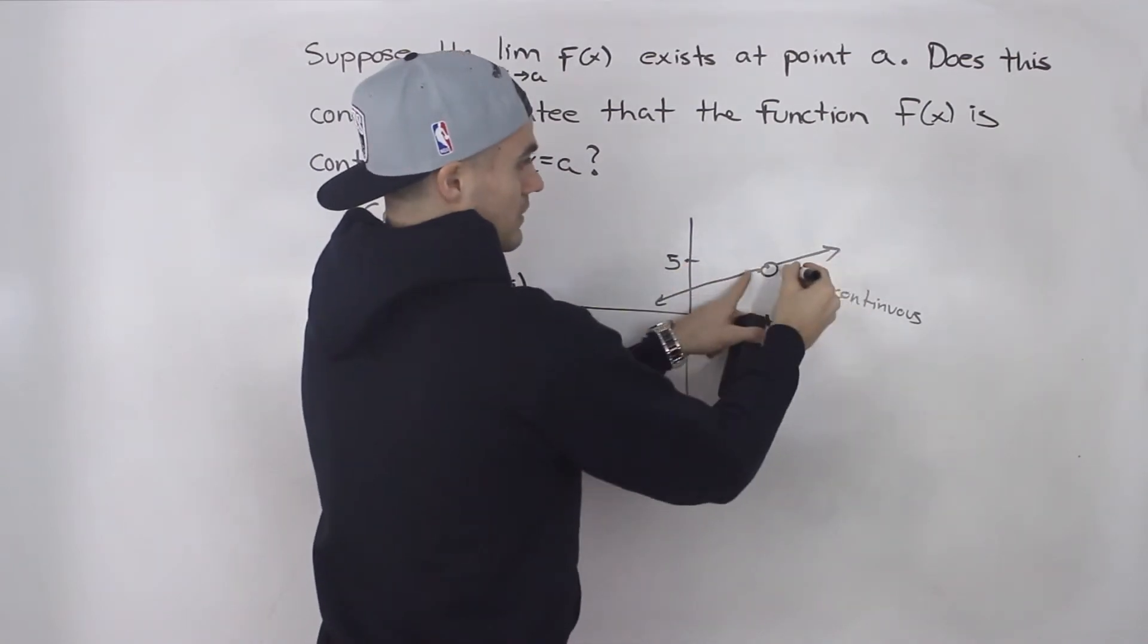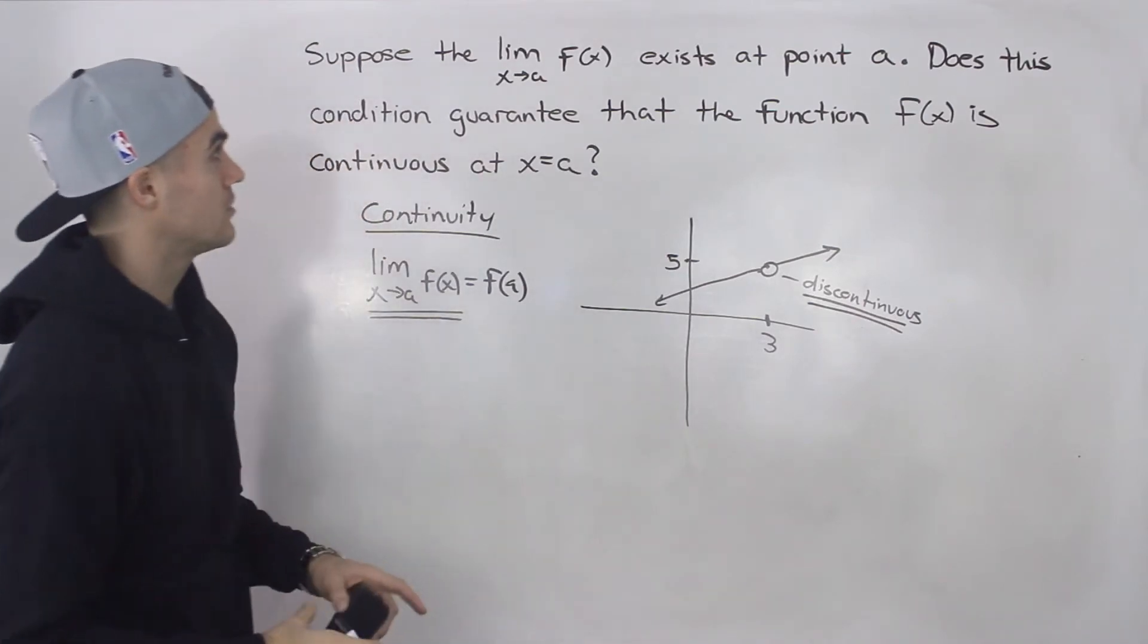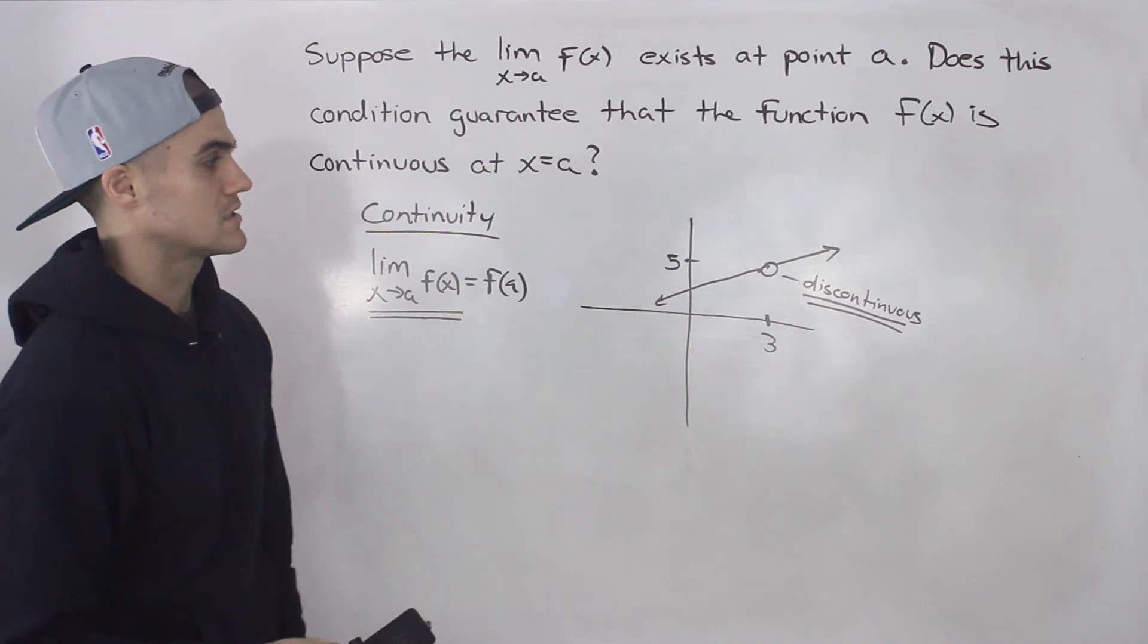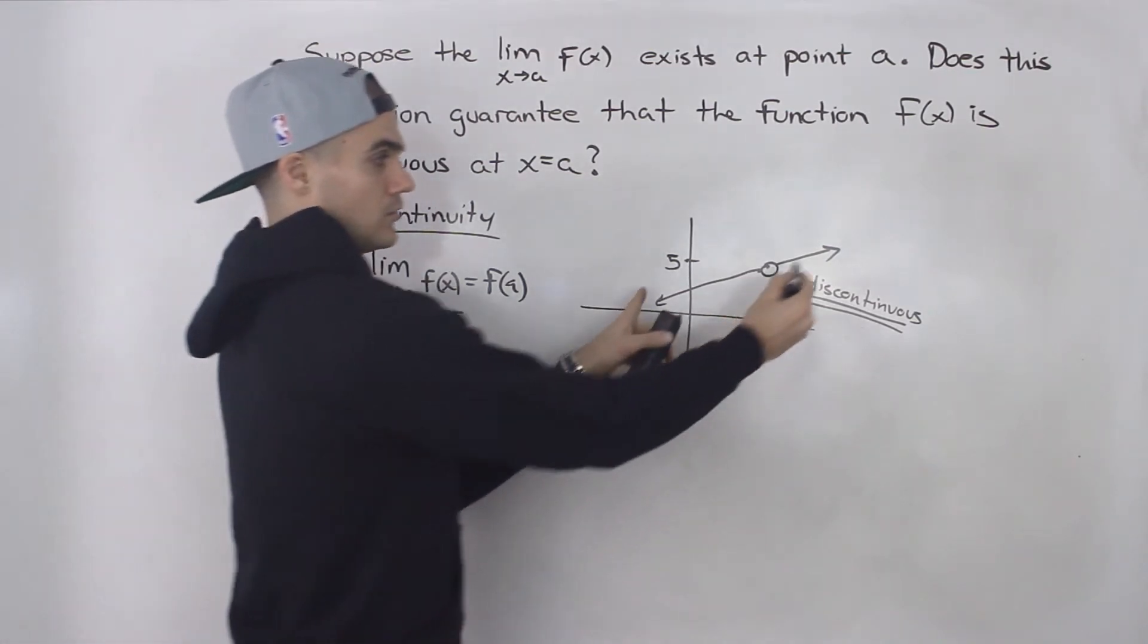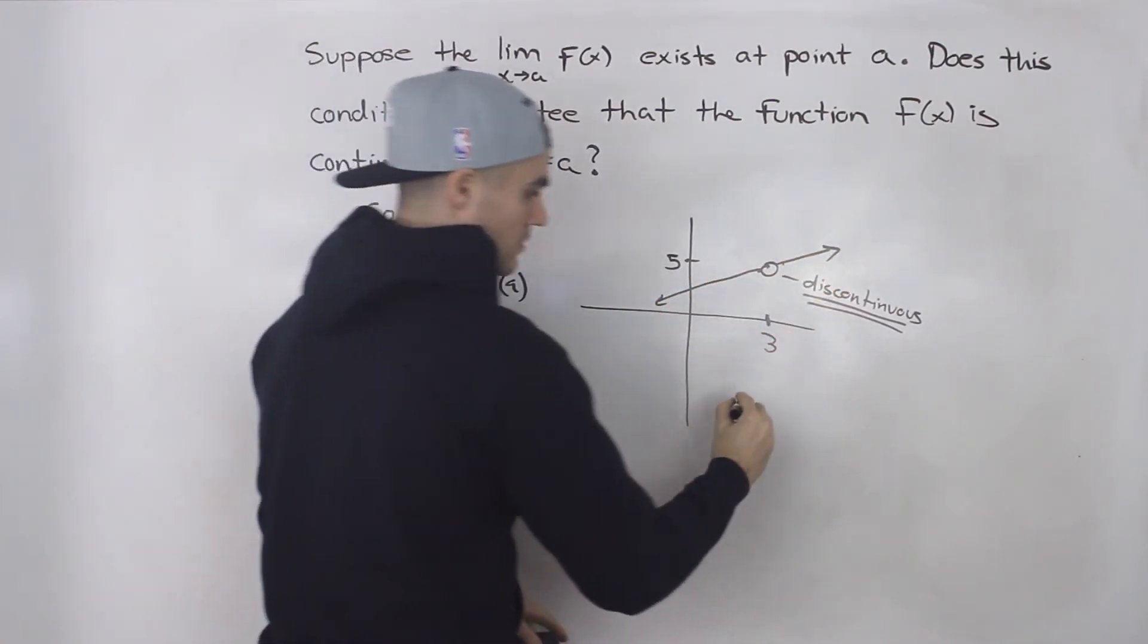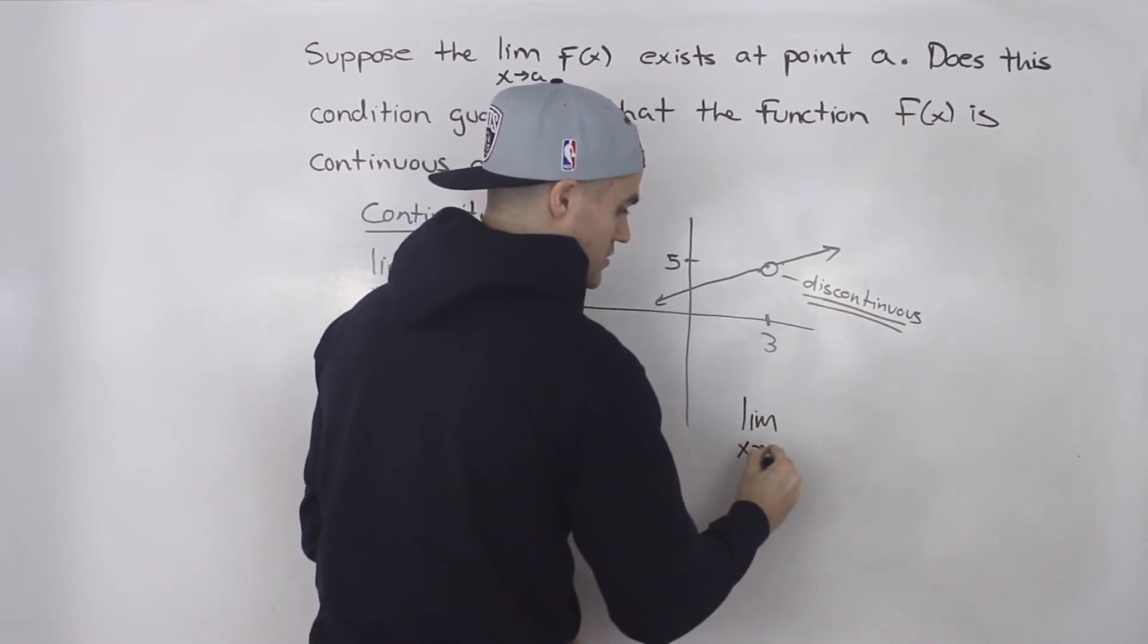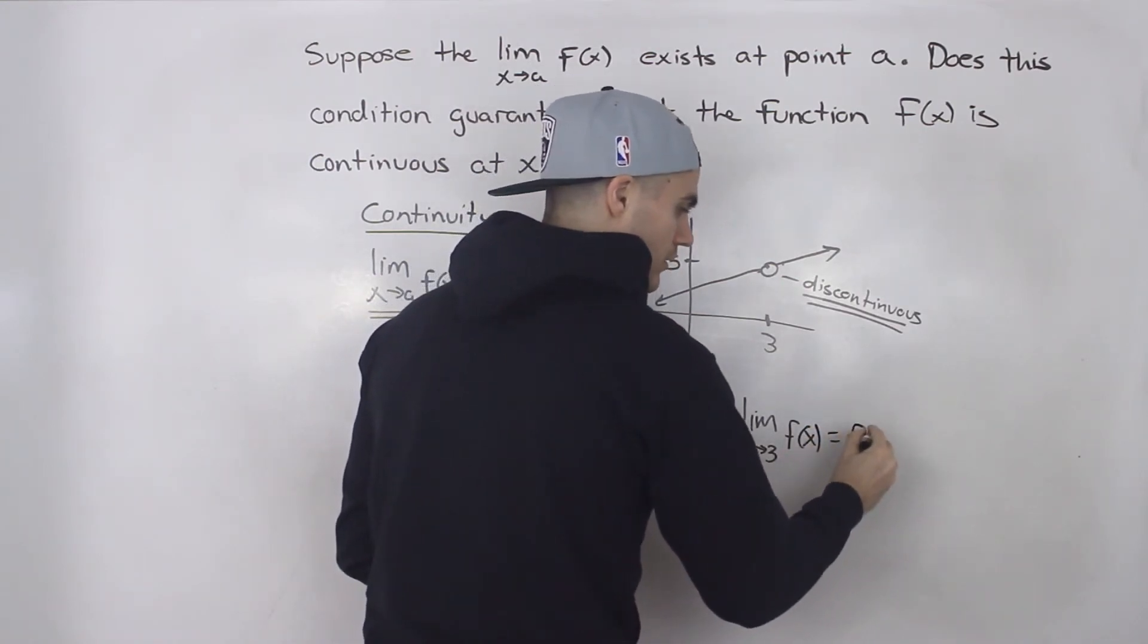So the limit exists, but the function is discontinuous. So that's an example of where the limit can exist, but the function would be discontinuous. In order for it to be continuous, not only does the limit have to exist, but the limit has to equal f of three as well. So if it was continuous, the limit as x approaches three of the function has to equal f of three.